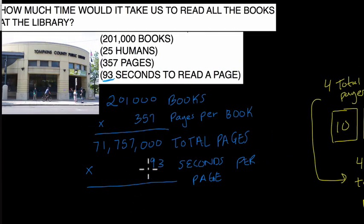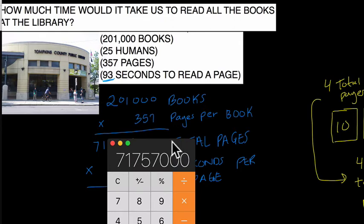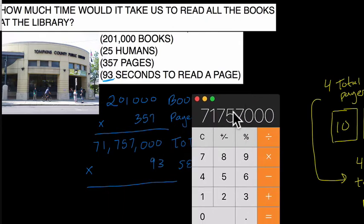I take 93 and multiply it by 71,757,000, so times 93. And we get this number, 667,340. So what is this number? So we have ones, tens, hundreds, thousands, 10,000, hundreds, thousands, millions, 10 millions, 100 millions, billions. Whoa, we're in the billions now, right? Six billion, 673,401,000. Holy smokes.